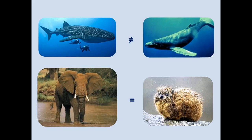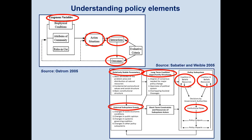In the policy world, we use frameworks to define what constitutes a policy situation. The one on top is from Eleanor Ostrom, who won a Nobel Prize for this work. The one on the bottom is from Paul Sabatier and his co-worker Chris Wiebel. They set out to analyze the major elements in any policy situation — what matters, what seems to affect it. There are careful, proven, research-based ways of defining what constitutes a policy situation and what's likely to happen.